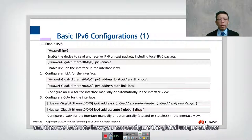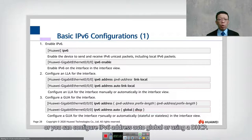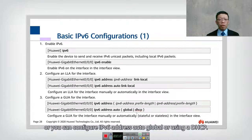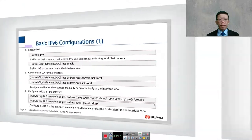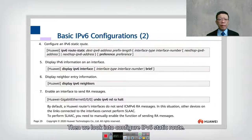Next we look at how to configure the global unique address. On the interface, you can configure the IPv6 address manually using the prefix length, or use 'ipv6 address auto global', or use DHCPv6.